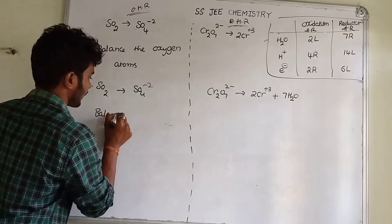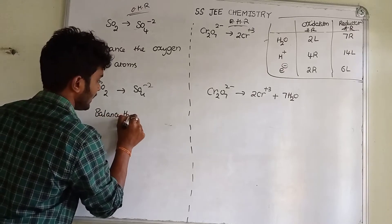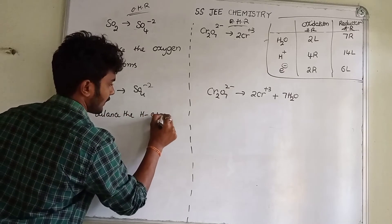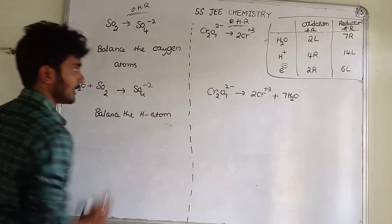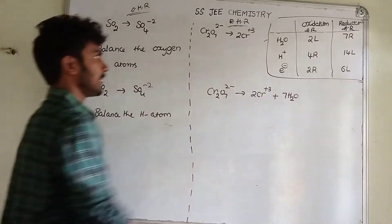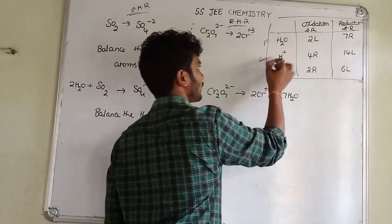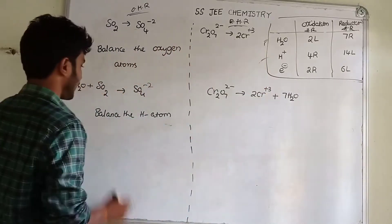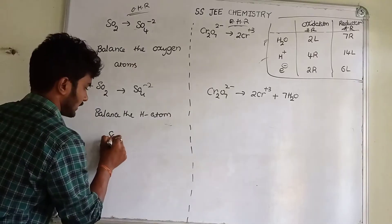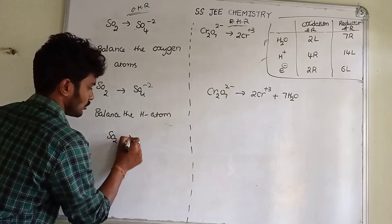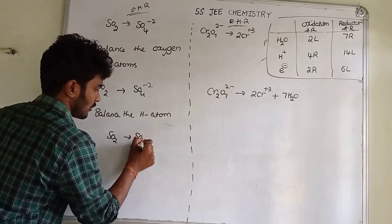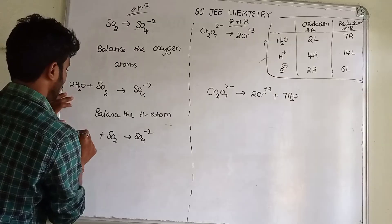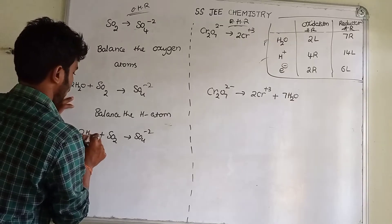Next, balance the hydrogen atoms — balance the hydrogen atoms. H plus: we add H⁺ ions to balance hydrogen. Count the hydrogen atoms on each side: 2, 1, 2, 1, 2, 2, 2.